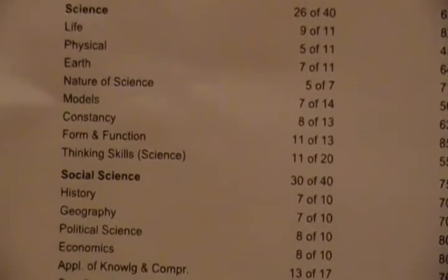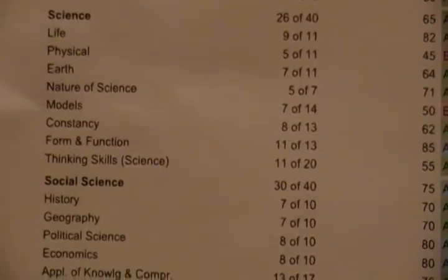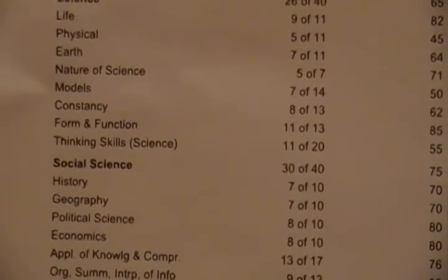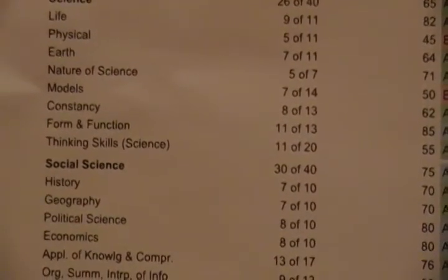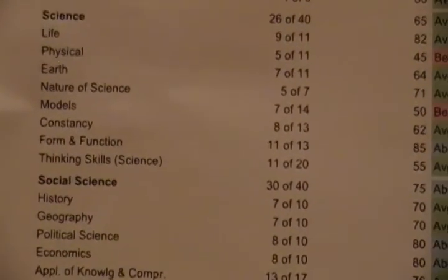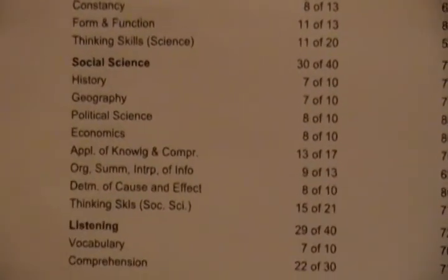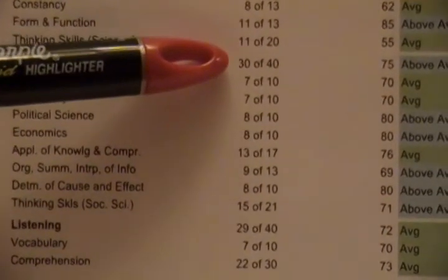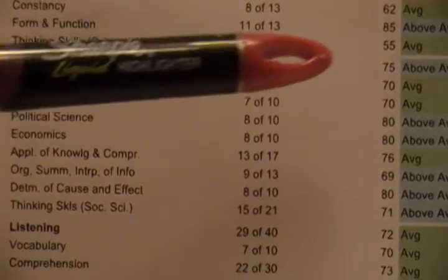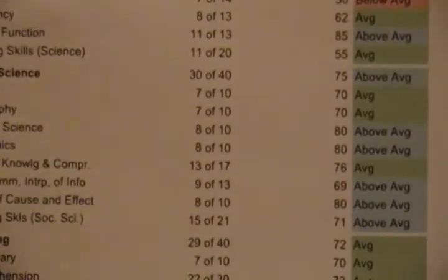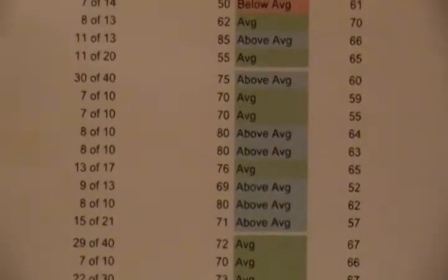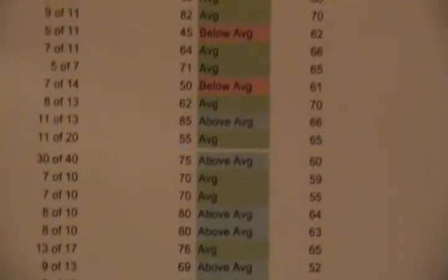They look at forms and functions, constancy — those are some things — so you get a variety of different questions going over those types of science questions. And then the social science: there are 40 problems, this student answered 30 of them correct, that gave her 75%, and the national percent correct is 60. That gave her an above average — let's look at the front page.